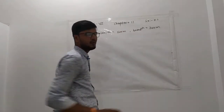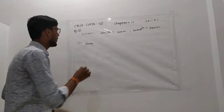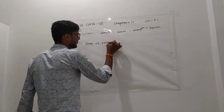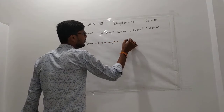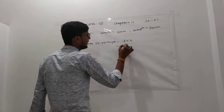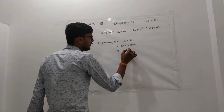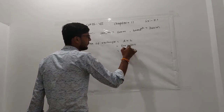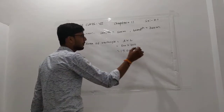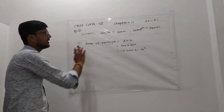Here length and breadth are different and it is a rectangular piece, so area of rectangle is length into breadth. So 500 into 300, which gives us 1,50,000.